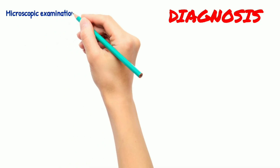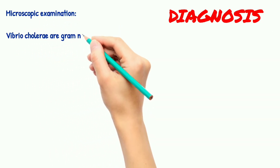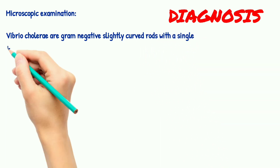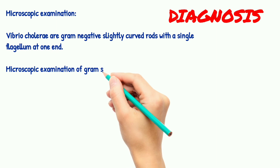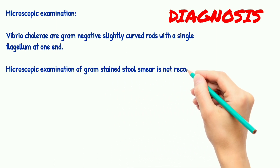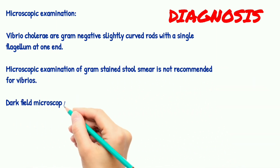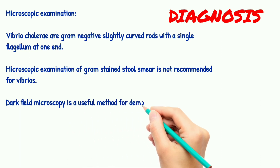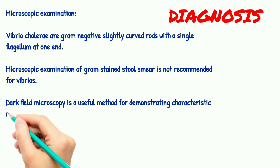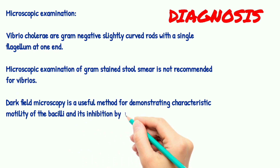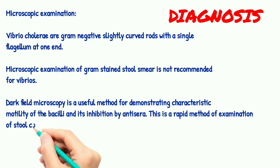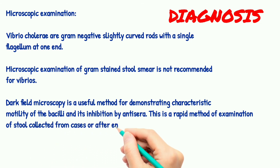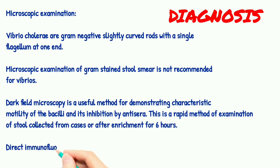Let's start with lab diagnosis. Microscopic examination: Vibrio cholerae are gram-negative, slightly curved rods with a single flagellum at one end. Microscopic examination of gram stain stool smear is not recommended for vibrios. Dark field microscopy is the usual method for demonstrating the characteristic motility of the bacilli and its inhibition by anti-sera. This is a rapid method for examination of stool.